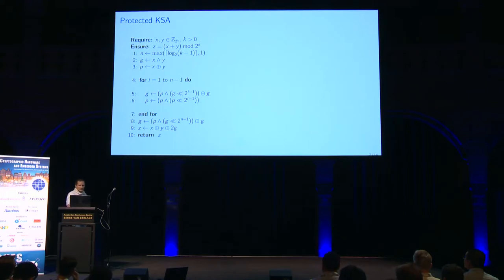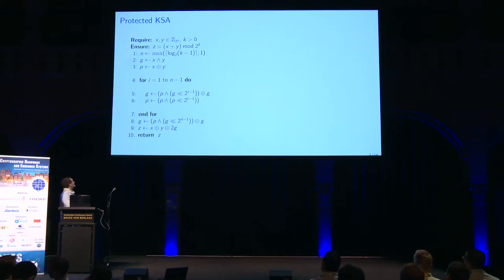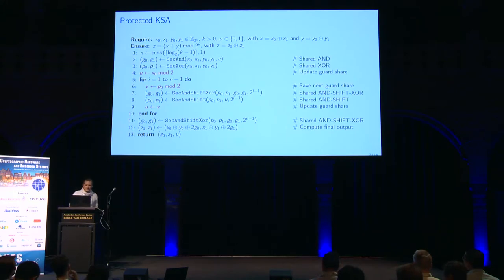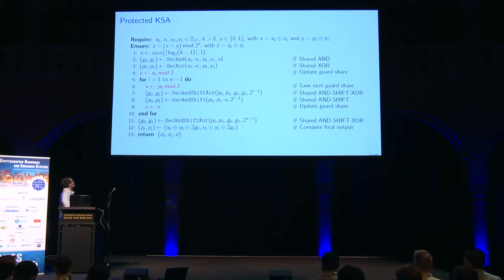To protect the Kogge-Stone adder, this is the algorithm we use to perform the modular addition. We simply replace all the gates — the AND gate, the XOR gate, and the special shift-AND-XOR or shift-AND gate — with secured variants. What I want to highlight is this part: we reuse a single bit of one of the input shares — specifically the first bit of X0, or the first bit of one of the propagates — which we reuse in the next iteration.